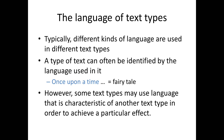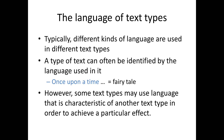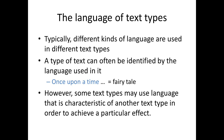However, some text types may use language that is characteristic of another text type in order to achieve a particular effect. For example, it's quite common for persuasive texts, such as advertising, to use language which may be more characteristic of informative texts. This is one way of trying to achieve the effect of persuading, by presenting an argument as though it was a fact and so hoping that the audience will accept it as a fact.